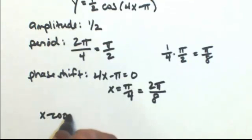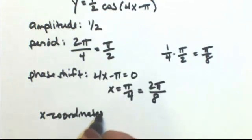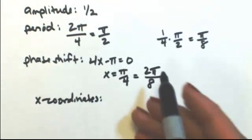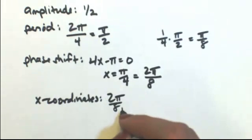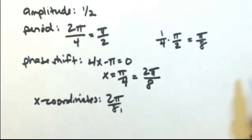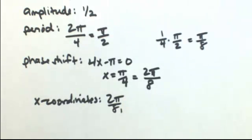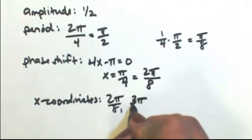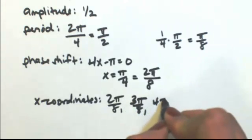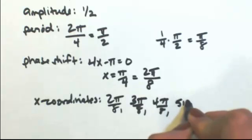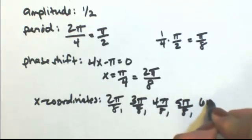So my x-coordinates, starting from my phase shift of two pi over eight, I'm going to add a pi over eight each time. So I'm just going to add a pi to the top because the eight will stay on the bottom. So three pi over eight, four pi over eight, five pi over eight, six pi over eight.